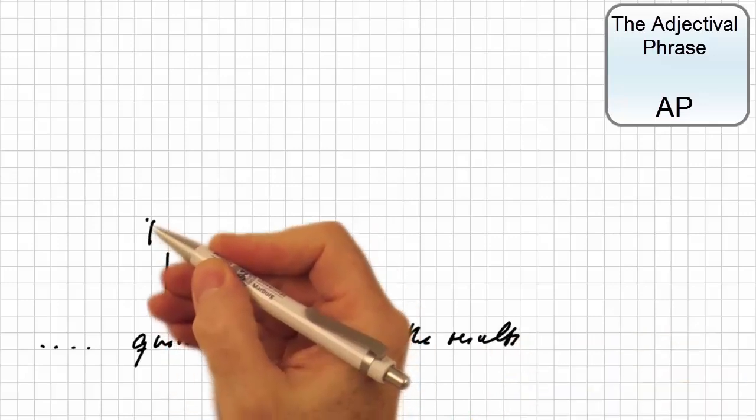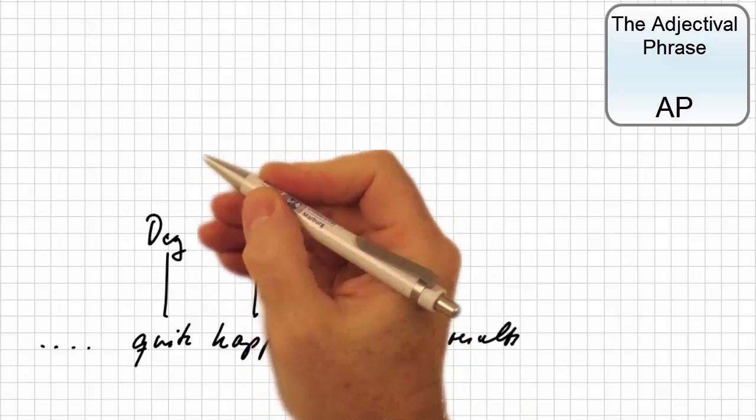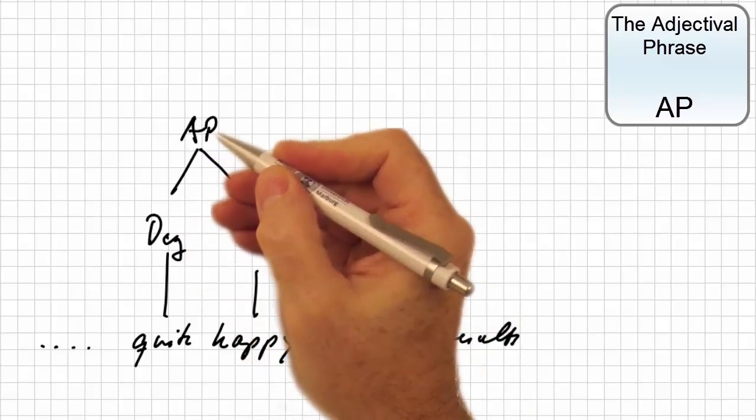Clearly, quite is a degree adverb which modifies the adjective happy. So the head is the adjective and we get an adjectival phrase.